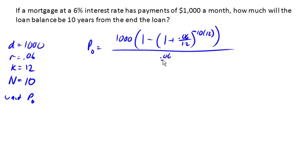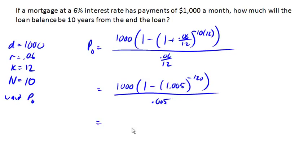And so we're going to pull out our formula for loan payments and start calculating. So 1 minus, 0.06 over 12 is 0.005, negative 120 divided by 0.005. And then I can pull out my calculator and calculate this out.